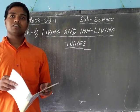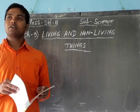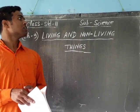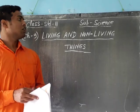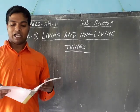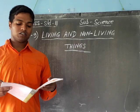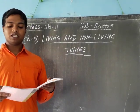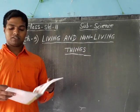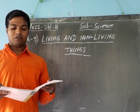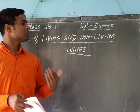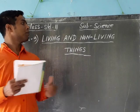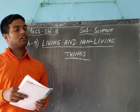All other things are non-living things. Non-living things do not have leaves, they do not grow and do not move. Such as table, chair, book, blackboard, church, etc.